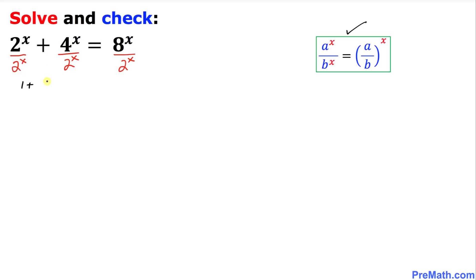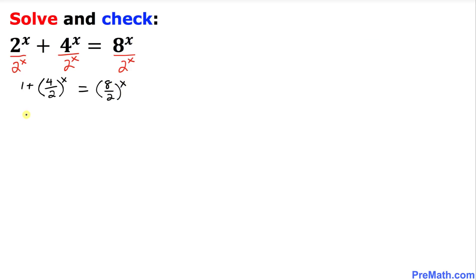I can write this one by using that rule. I can write 4 over 2 power x, and on the right hand side I am going to use the same rule, so that is going to give us 8 over 2 power x. Now let's simplify — that could be written as 1 plus 4 over 2, which reduces to 2 power x, equals to 4 power x.